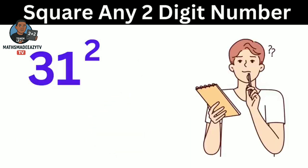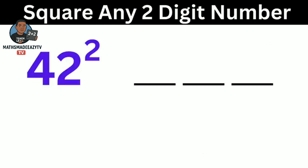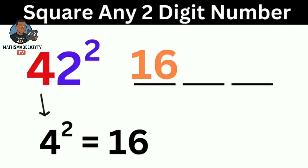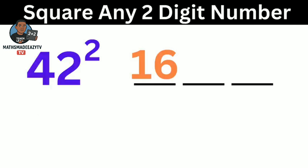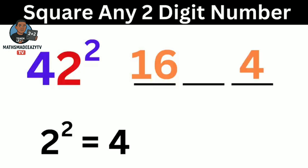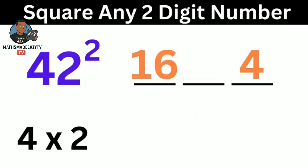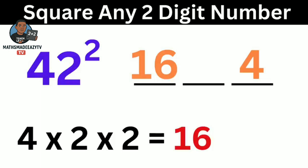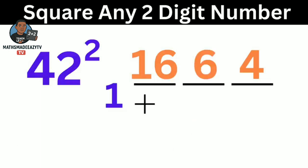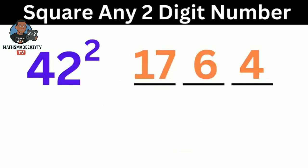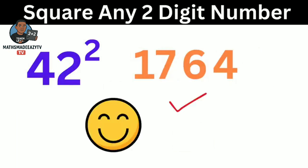Now let's consider a slightly larger example: 42 square. We divide it into 3 parts. We write 4 square, which gives us 16. Next, we consider the last digit, which is 2. We square it and we have 4. We write it here. For the middle part, we multiply the 2 digits together: 4 multiplied by 2, then multiply by the power, which is 2, so we have 16. Since this is 2 digits, we write 6 here and carry 1, so we add it to the 16, giving us 17. This gives us 1,764. That was lightning fast, right?